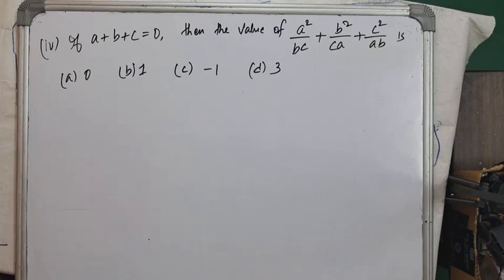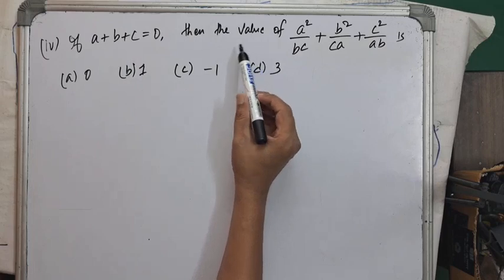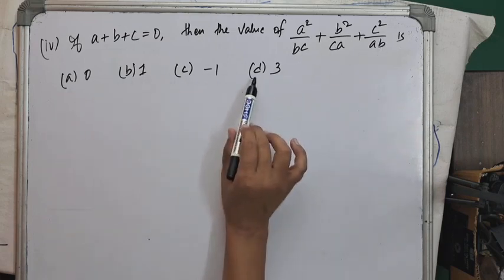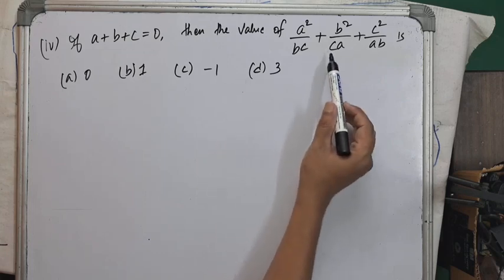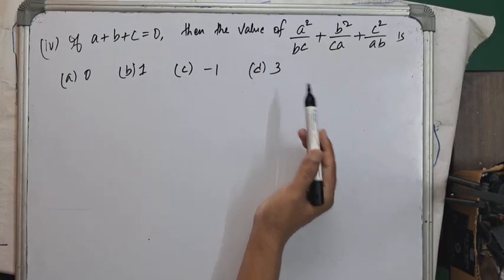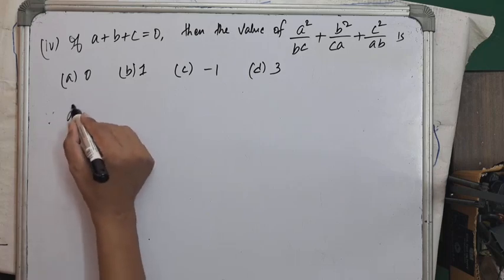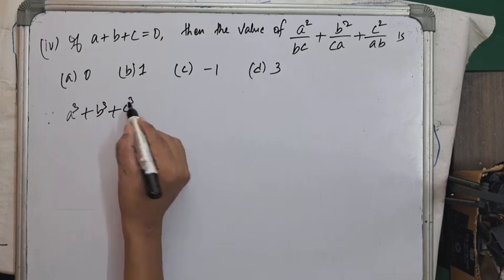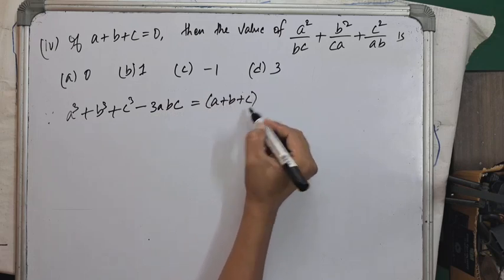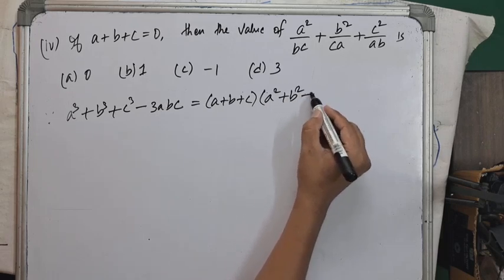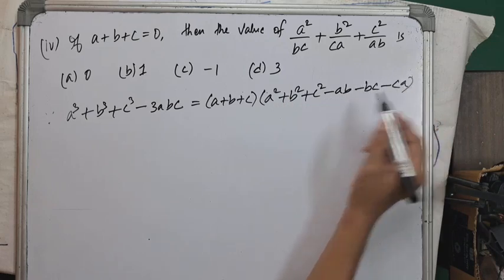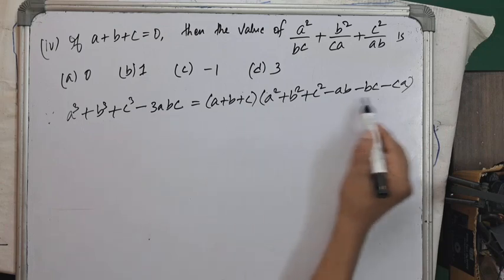Question number 4: if a+b+c = 0, find the value of a²/bc + b²/ca + c²/ab. We use the formula a³+b³+c³ - 3abc = (a+b+c)(a²+b²+c²-ab-bc-ca). If a+b+c = 0, then a³+b³+c³ = 3abc.